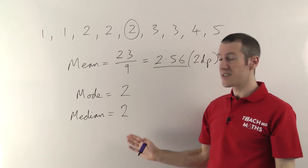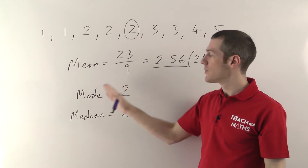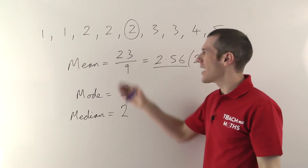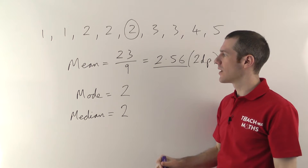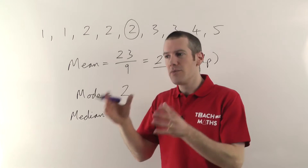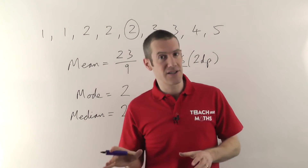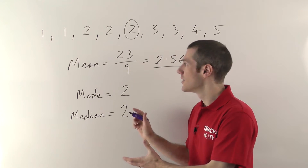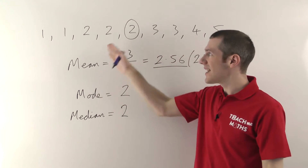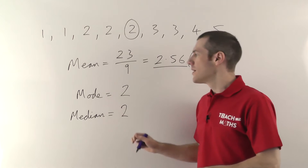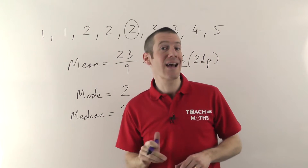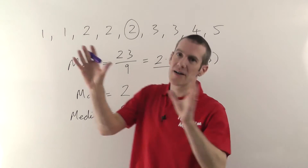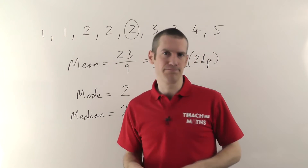The median happens to be two in this case, the same as the mode. So: median is the one in the middle, mode is the one that occurs the most, and mean is the normal average — add them all up and divide by how many you've got. Those are your concepts. The number of numbers can get very large in statistics, but the basic ideas don't change. I'll show you a couple of special cases before we finish.